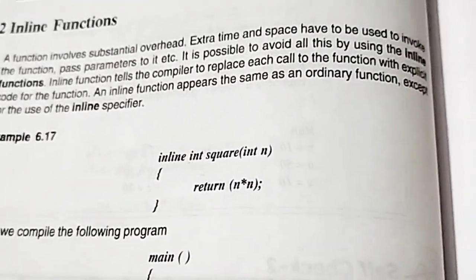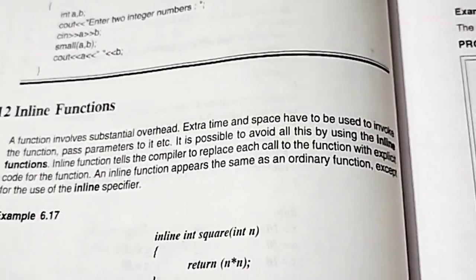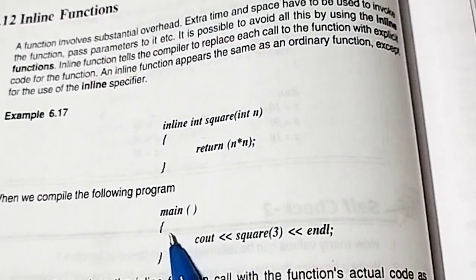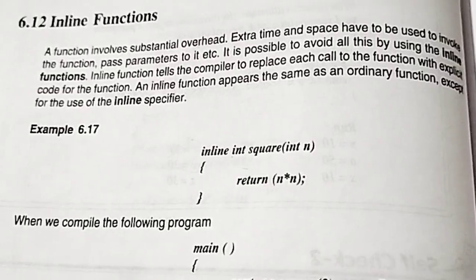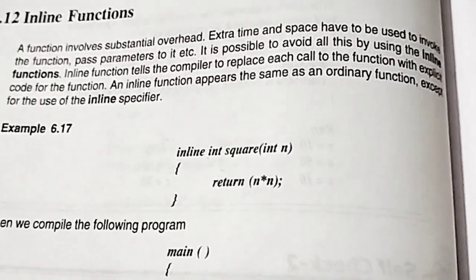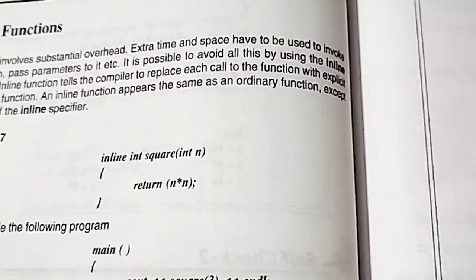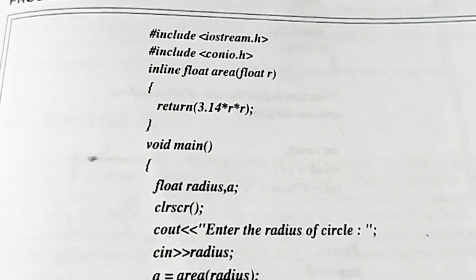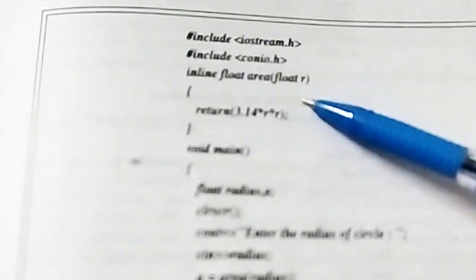Now coming to inline functions. A normal function call involves jumping to a different location in memory. But when we use an inline function, the function definition is copied directly at the point of call, so the execution time is reduced and the overhead of a function call is saved. However, the disadvantage is that because the definition is copied at every call site, memory usage increases. To use an inline function, we use the keyword 'inline' before the function definition, and the compiler will copy the definition wherever the function is called.